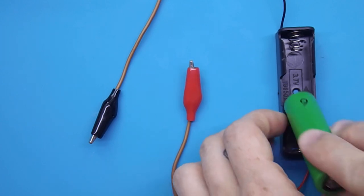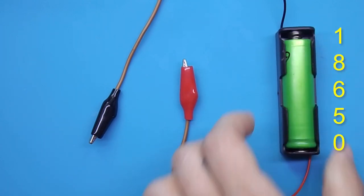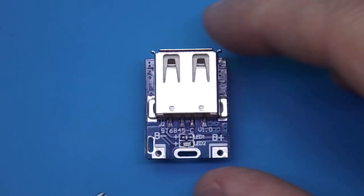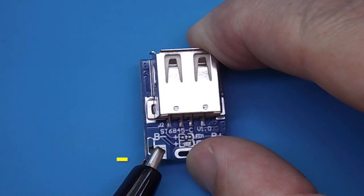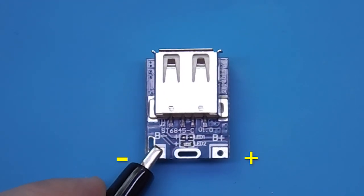For a simple power bank, you only need one battery. In this case, I will use a small 18650 battery. Plus and minus coming from the battery must be connected to the same converter terminals.